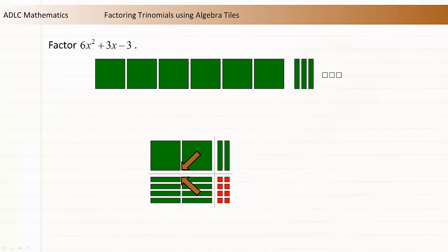Rectangles beside one another share a common dimension. These two rectangles are each 2x long, these rectangles are each 4y, and so on.